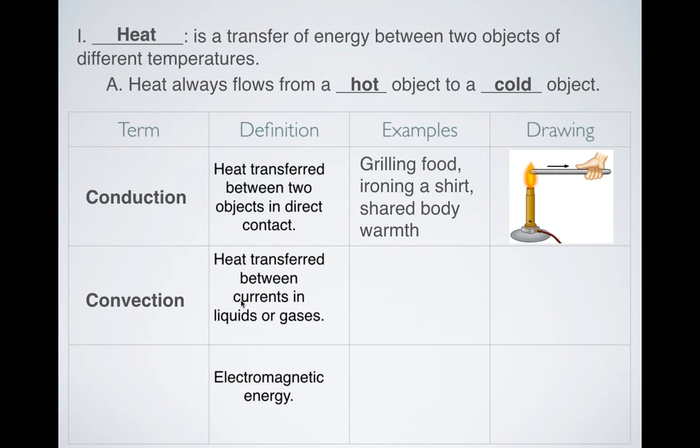Convection. Convection is when heat is transferred between currents in liquids or gases. So it's not conduction, but it is its own little form that's specialized. So conduction happens between solids. Convection happens between solids and possibly liquids, or liquids and gases, or gases and solids.